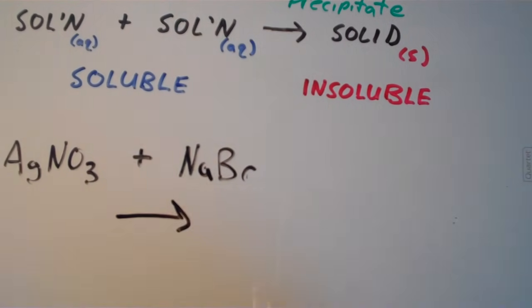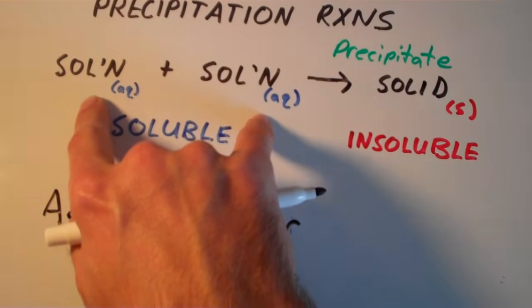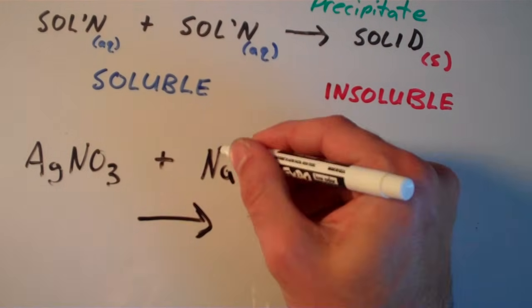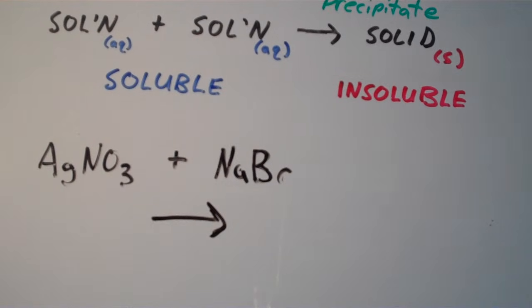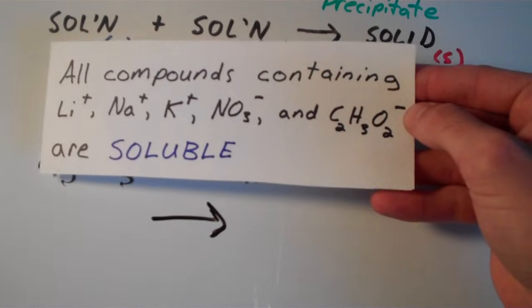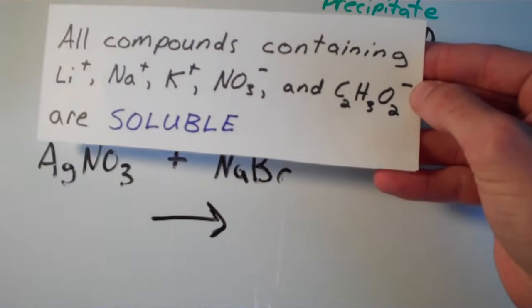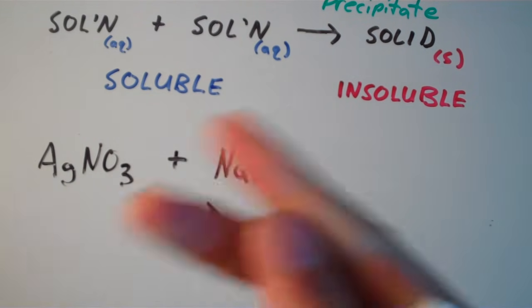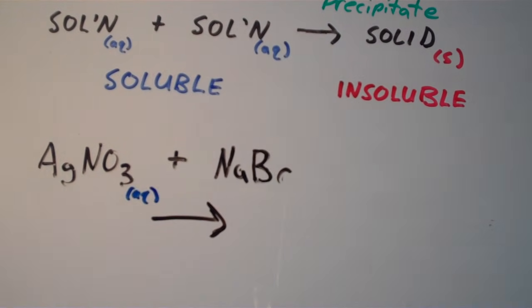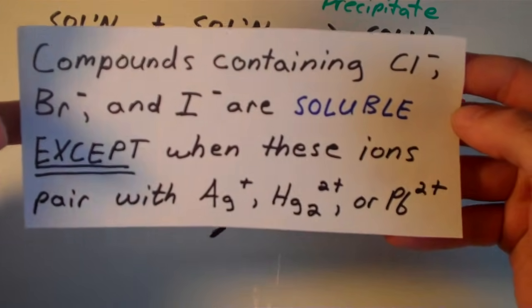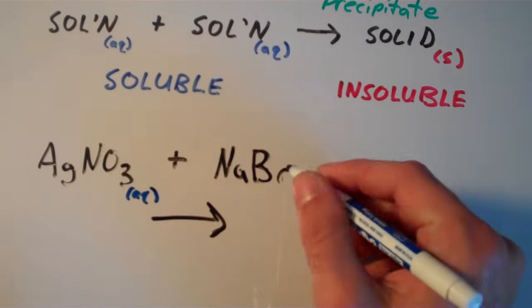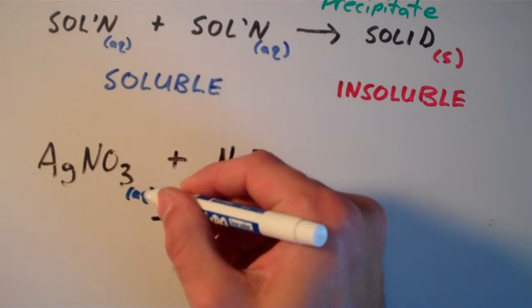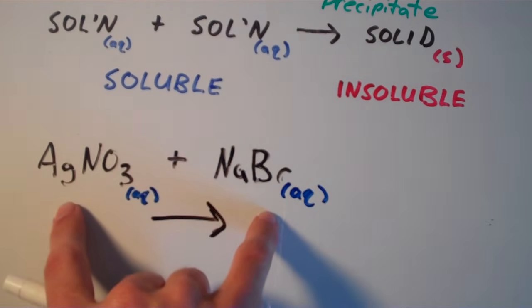First, we have to realize that in our initial condition both of these solutions are soluble — both silver nitrate and sodium bromide must be soluble. We apply the solubility rules: one rule says all compounds containing nitrate ion are soluble, so AgNO3 is aqueous. Going back to the bromide rule: bromide is generally soluble except when paired with silver, mercury(II), or lead(II) ions — but NaBr pairs with sodium, not those exceptions. So both reactants are aqueous, and we may indeed have a precipitation reaction.